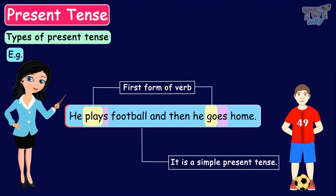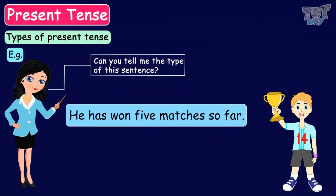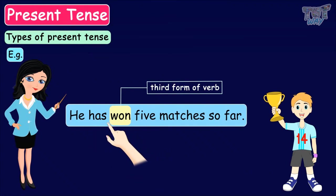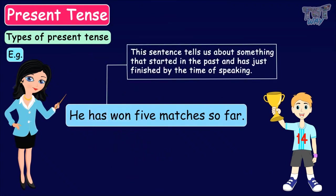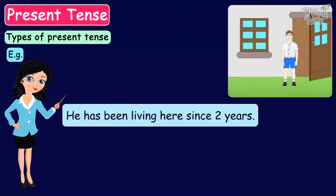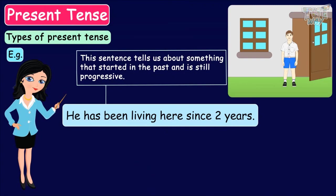Next example: 'He has won five matches so far.' This is present perfect tense, as the third form of the verb won along with the helping verb has is used, and the sentence tells us about something that started in the past and has just finished. Next: 'He has been living here since two years.' This sentence tells us about something that started in the past and is still progressive — so it is present perfect progressive tense, using has along with been and the first form of the verb live with ing.